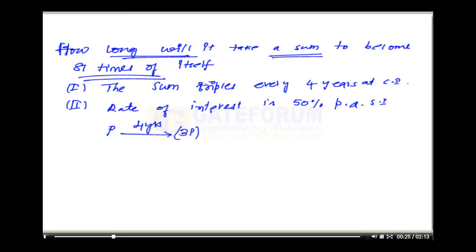Next this 3P will be considered as principal amount for the next 4 years. So after next 4 years it will be triple again. That means 3 times of the principal which is 3P, now it is 9P. Then this 9P will become 3 into 9P that is 27P and after that it will become 81P.